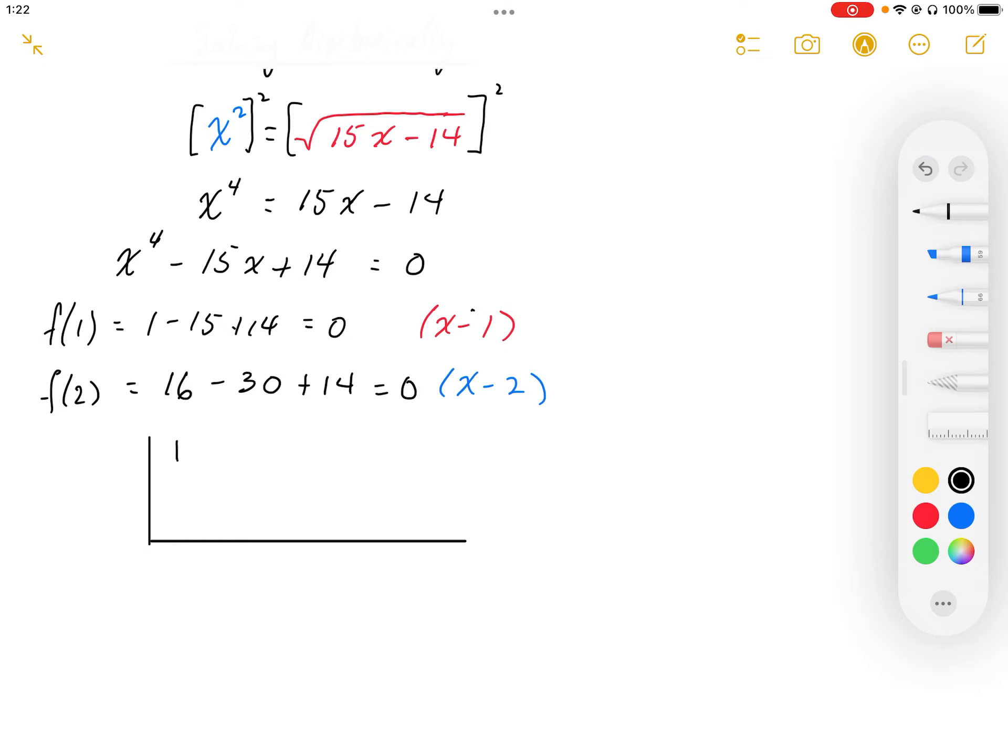So I have 1, 0 cubed, 0 squared, negative 15, positive 14. I'm going to use negative 1.